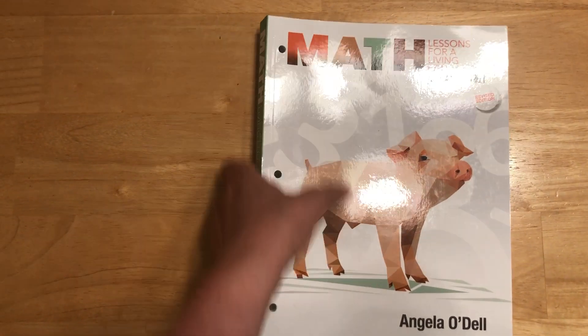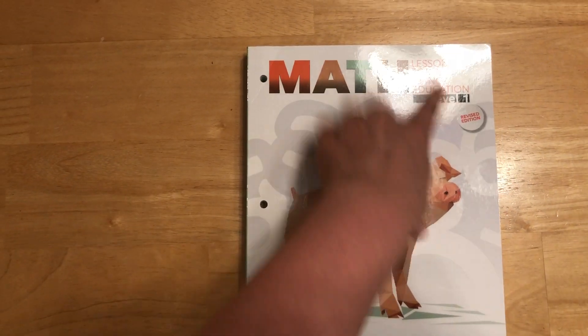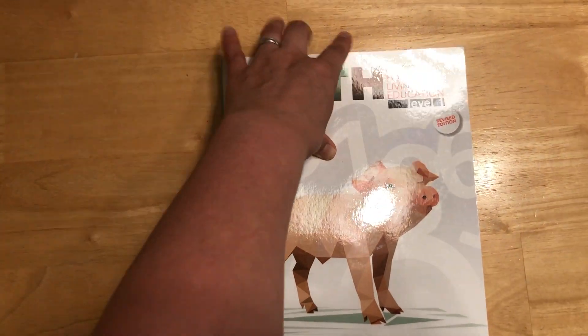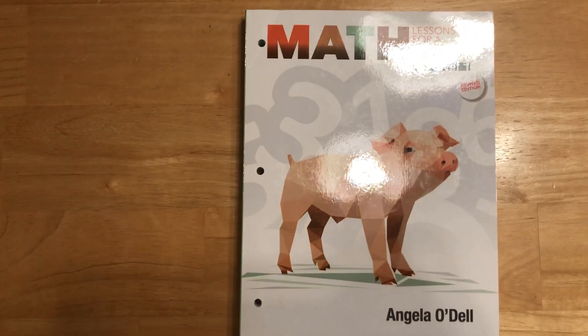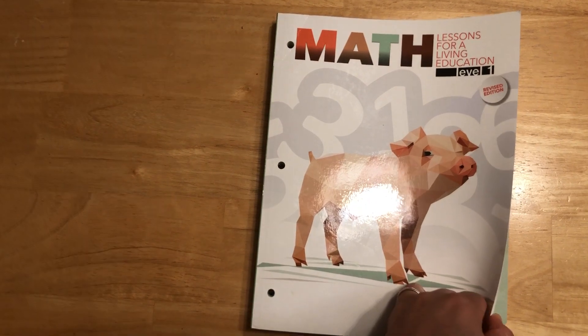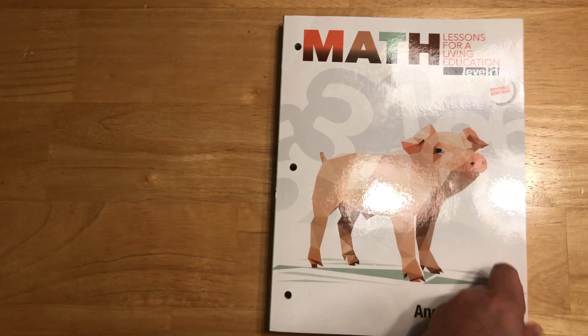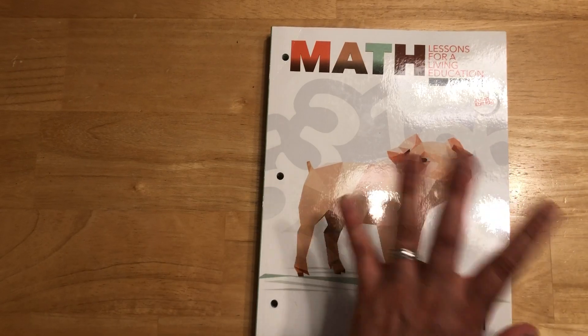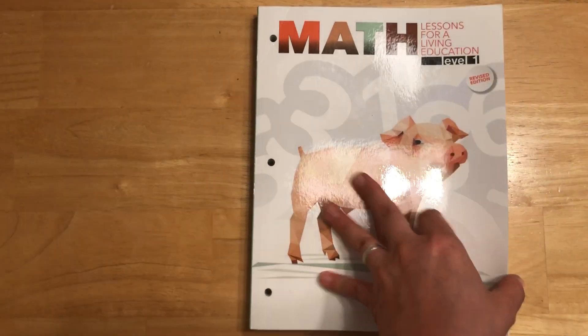This is right now the first level that they have, like the lowest level. They are, I did see, coming out with a level kindergarten, a level K, and that releases soon. But as of right now, level one is the lowest level. However, a lot of people use that for kindergarten. So it'll depend on your kid.